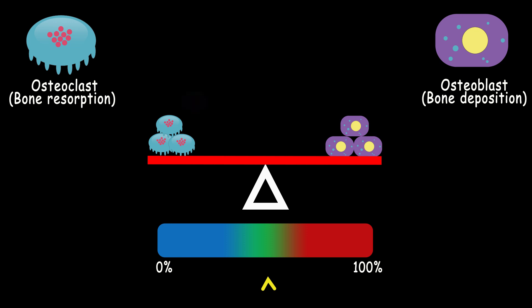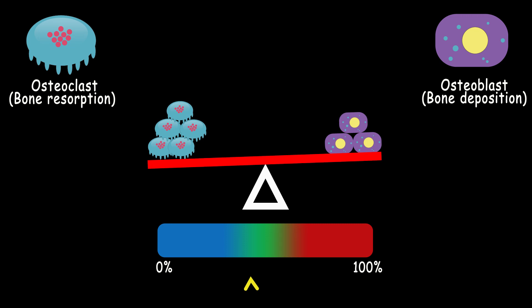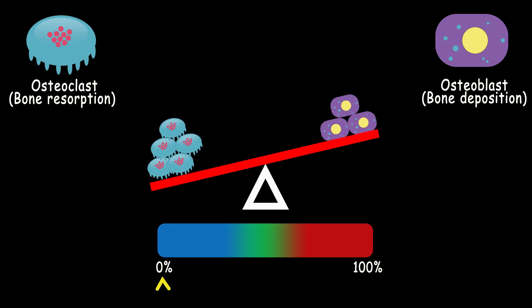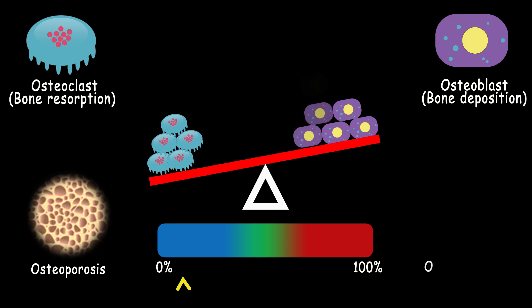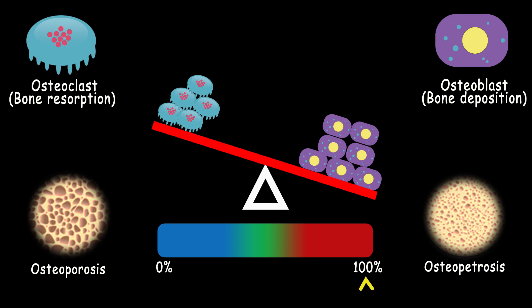Now, if this balance disrupts and the population of osteoclasts increases, the rate of breaking down the bone would be higher compared to making the bone. Therefore, it would result in lower bone density and cause osteoporosis. However, if the population of osteoblasts increases compared to osteoclasts, it would cause osteopetrosis.